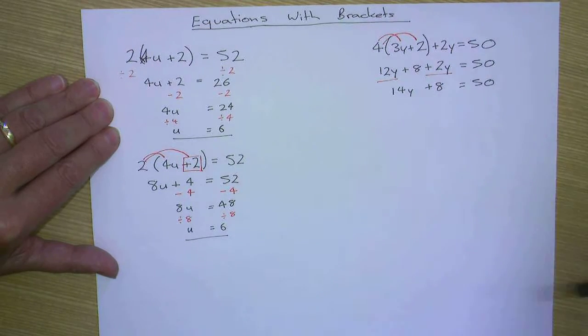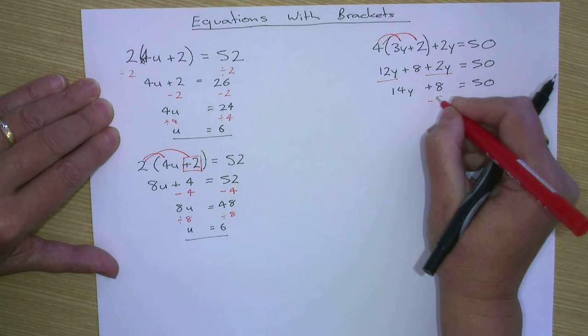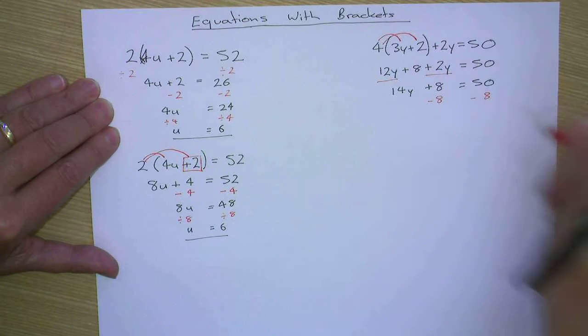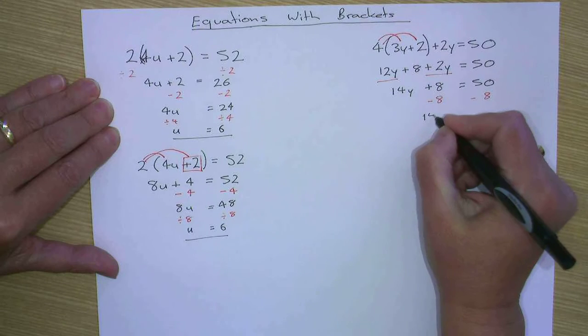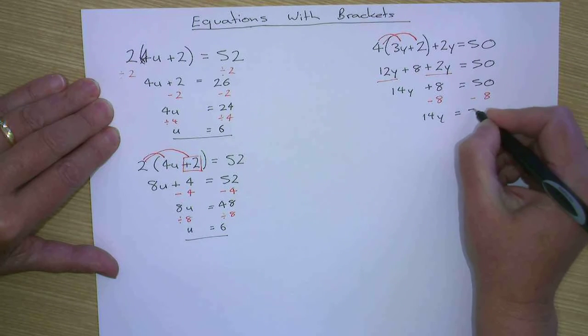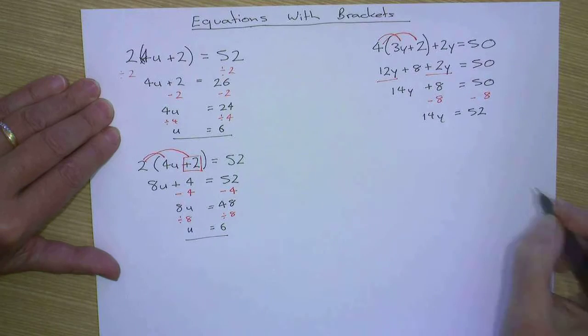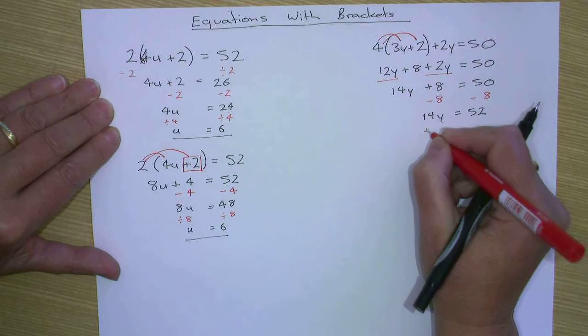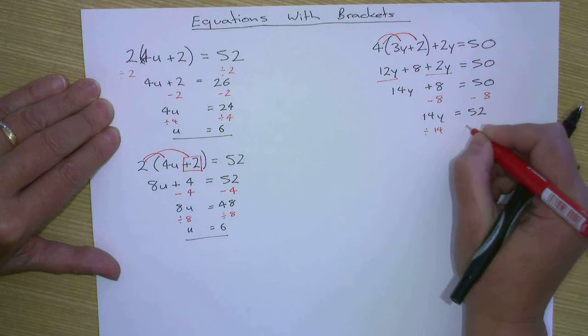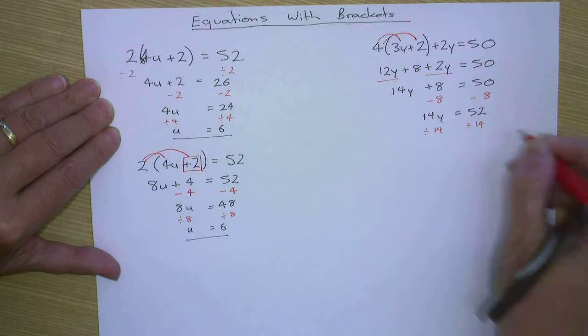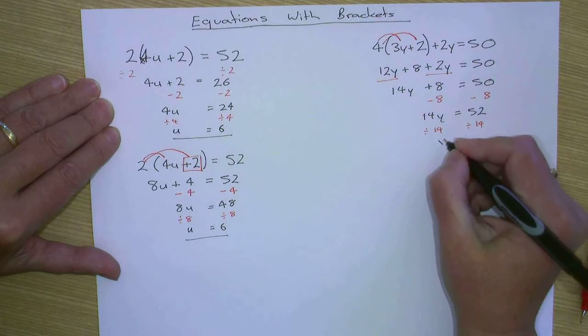Now to get the y on its own, firstly we subtract the eight. So that's fourteen y equals fifty-two. And then we divide both sides by fourteen. So that's fourteen. So y equals.